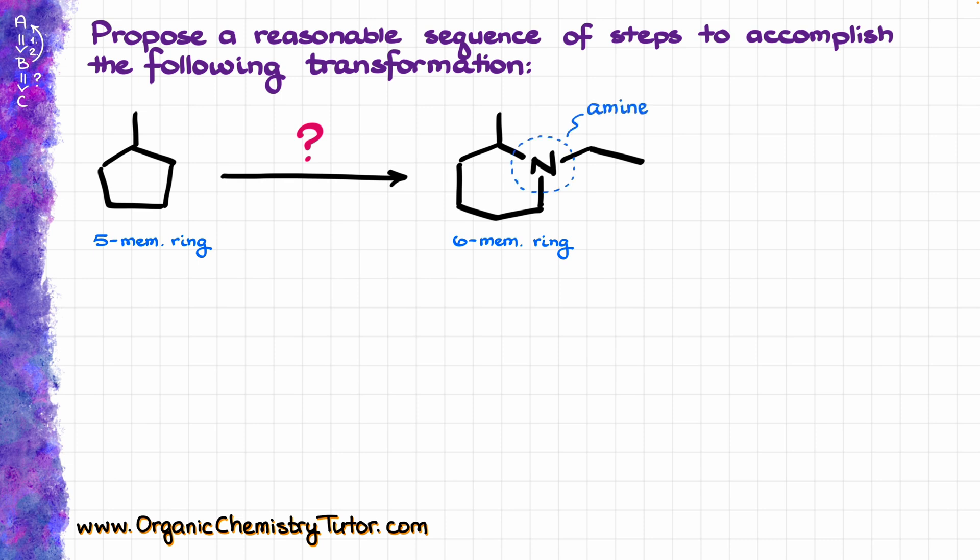Now, in terms of the functional groups, we just have the amine over here, so nothing fancy. So, the most reasonable way to approach the synthesis will be first to break our ring open using ozonolysis, because that is the most common reaction that we typically see that opens up rings and breaks carbon-carbon bonds, and then, once we do that...